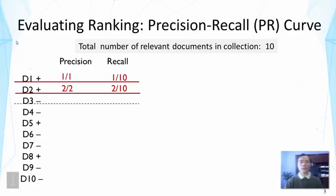What if the user stops at the third position? This is interesting because in this case we have not got any additional relevant document. So the recall doesn't change. But the precision is lower because we've got a non-relevant one. So what's exactly the precision? It's two out of three. And recall is the same, two out of ten.